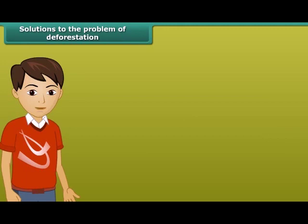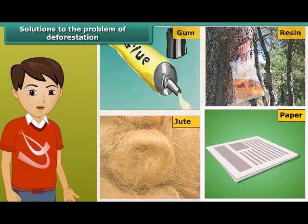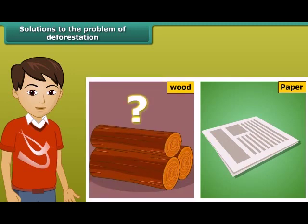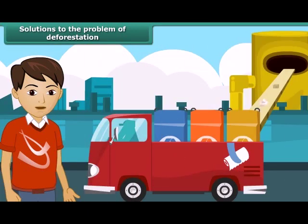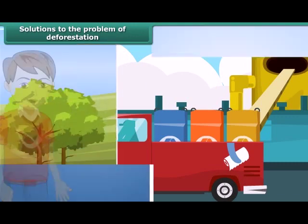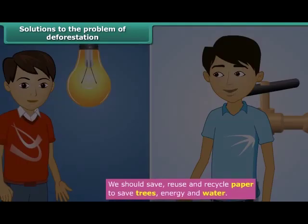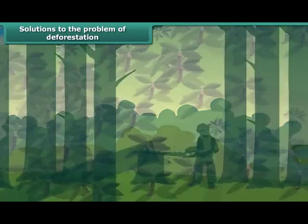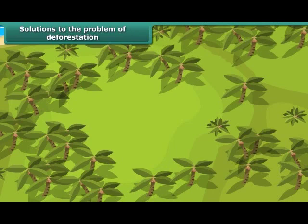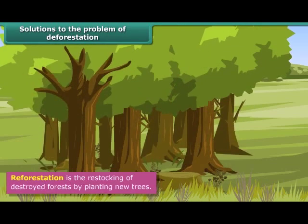We get many things from forests — gum, resin, jute, and paper are important products. Recycling of paper is a simple answer to alternatives for wood products. Paper can be recycled five to seven times, saving not only trees but also energy and water. However, recycling paper is only a temporary measure for controlling deforestation. The permanent solution is reforestation — restocking destroyed forests by planting new trees.